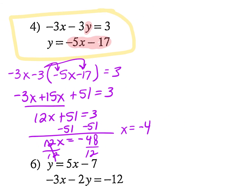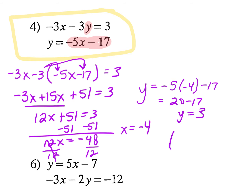How do I figure out what y equals? Plug it back in. Does it matter which equation? No. But do we always want to try the easiest route? Yeah. So I'm going to plug it back into where it says y equals: negative 5 times negative 4 minus 17. Negative 5 times negative 4 is 20, minus 17 gives me 3. So my solution is negative 4 comma 3.